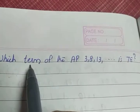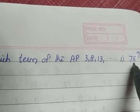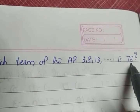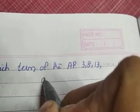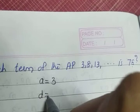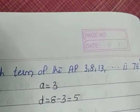The next question is which term of the AP 3, 8, 13, etc. is 78. So I told earlier, whatever the question, you have to write a and d. What does a equal to? 3, the first term. d equals 8 minus 3, second term minus first term, which gives you 5.